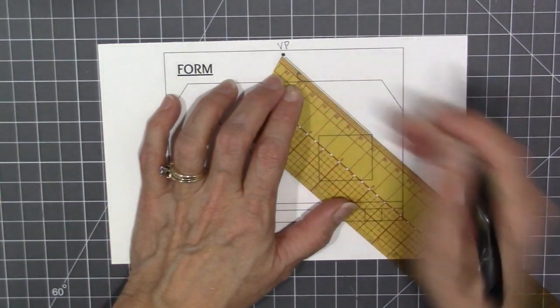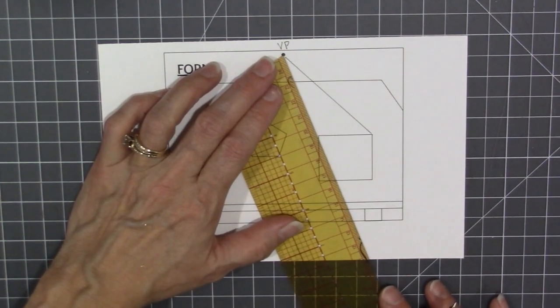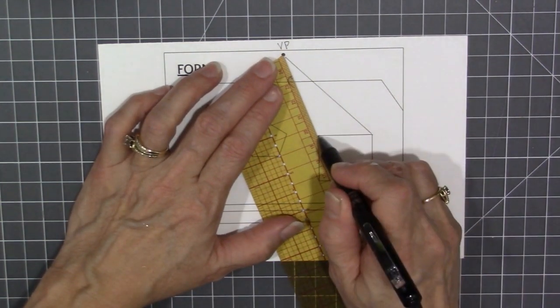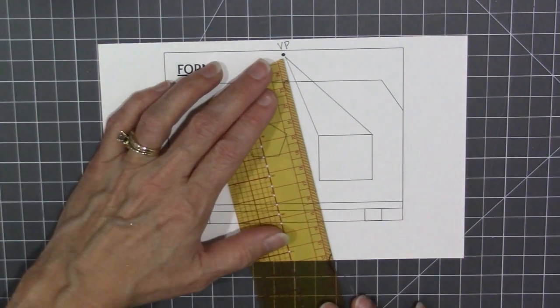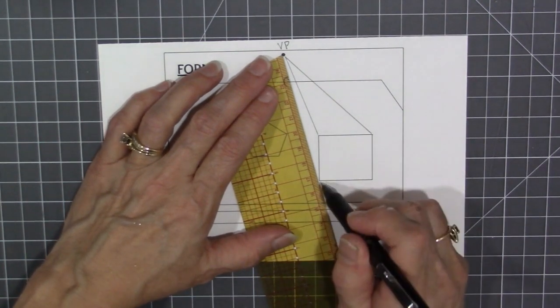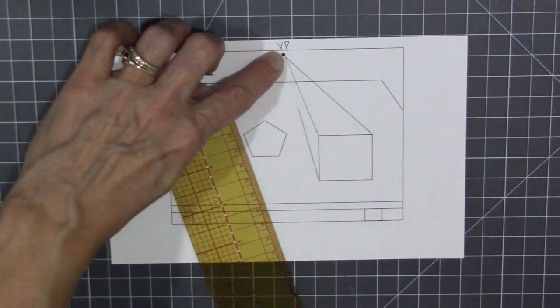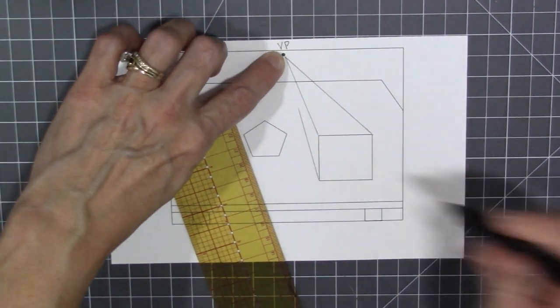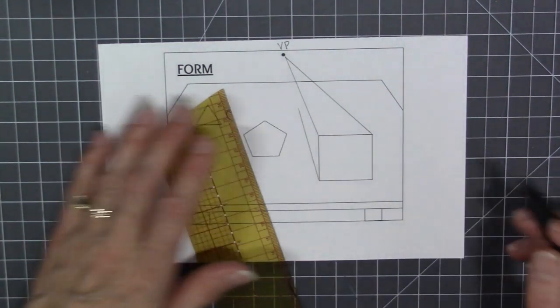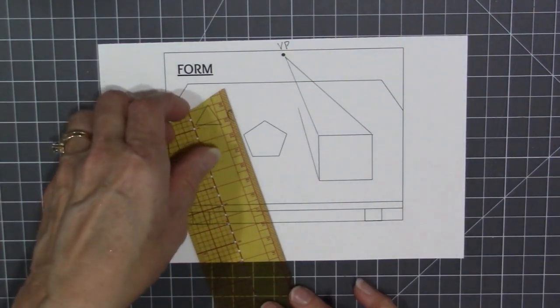Every line needs to be straight by standing up your pencil and letting the tip follow against the edge of the ruler.